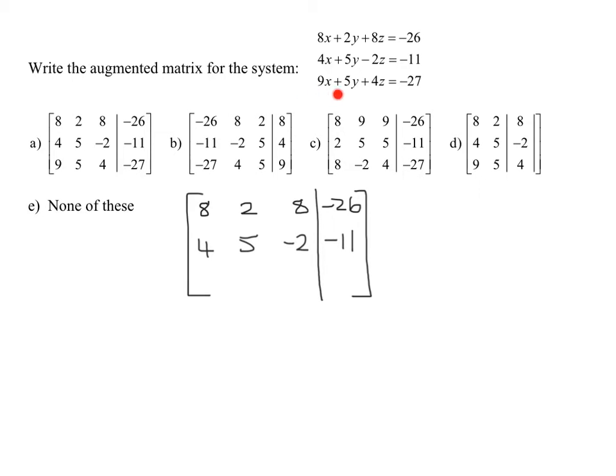Last equation is my last row. What are the coefficients? 9, 5, 4, and my constant, negative 27.